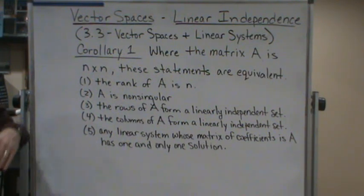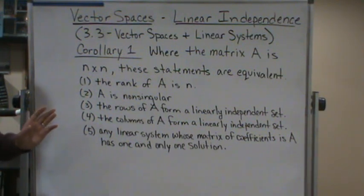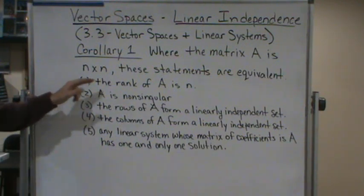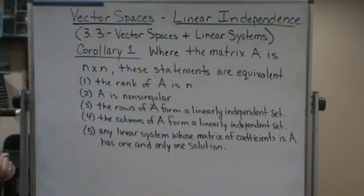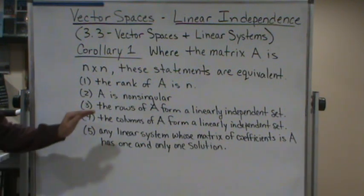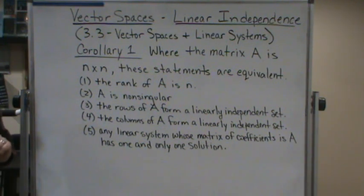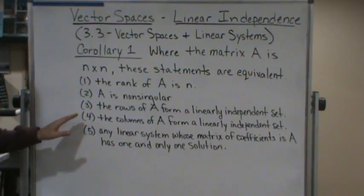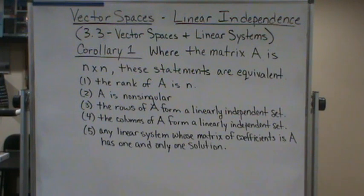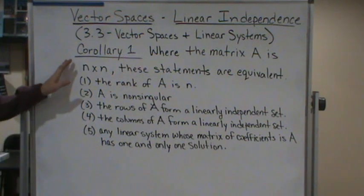One: the rank of A is n. Two: A is non-singular. Three: the rows of A form a linearly independent set. Four: the columns of A form a linearly independent set. And five: any linear system whose matrix of coefficients is A has one and only one solution.